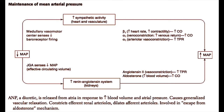Epinephrine and norepinephrine are released from nerve terminals of these sympathetic nerves, and they bind to the beta-1 and alpha-1 receptors in the heart and the vasculature. The beta-1 receptor causes increased heart rate and increased contractility, which leads to an increased cardiac output.